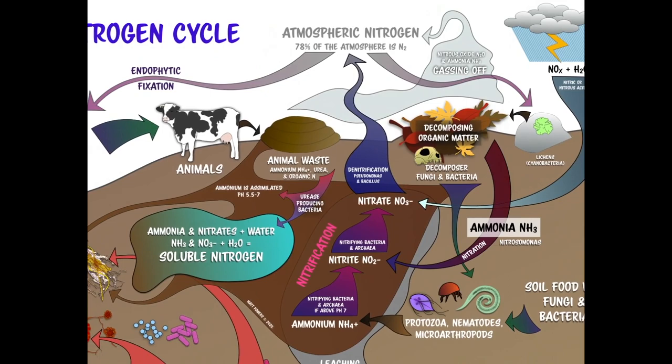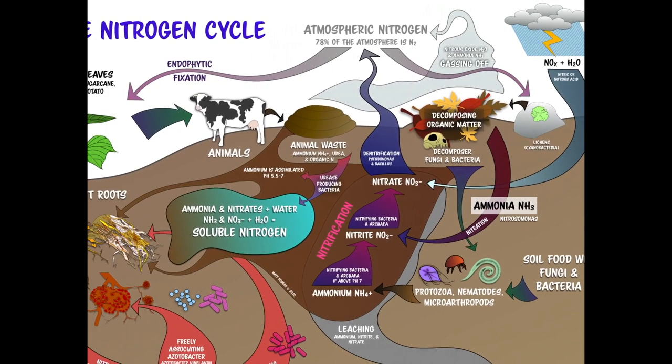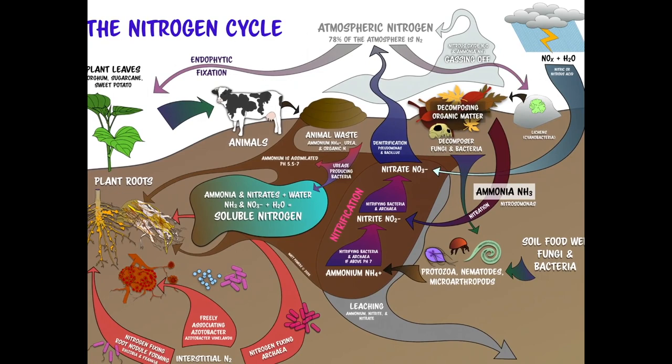Nitrogen is similar to carbon, sulfur, and phosphorus in that it can give and take eight electrons, and that allows it to have the greatest effect on pH and EH — soil redox potential.